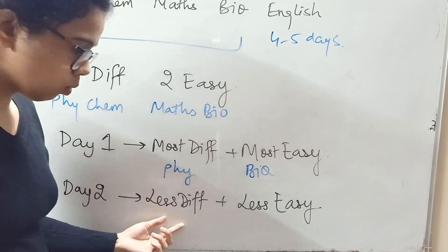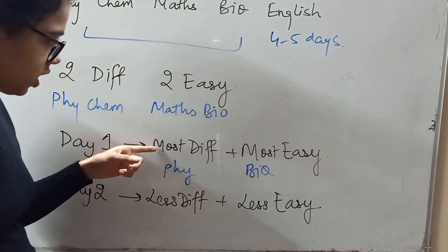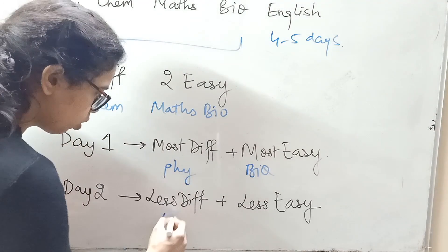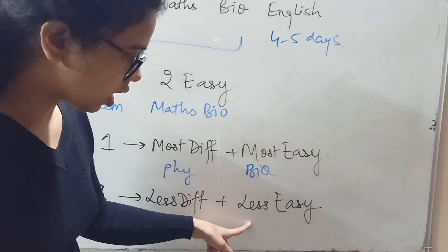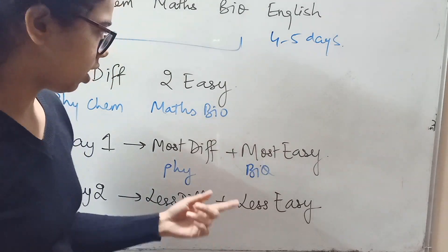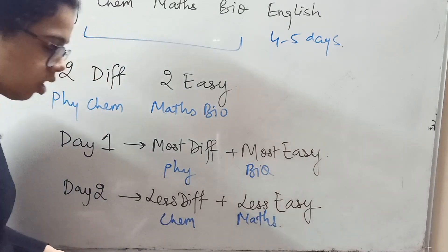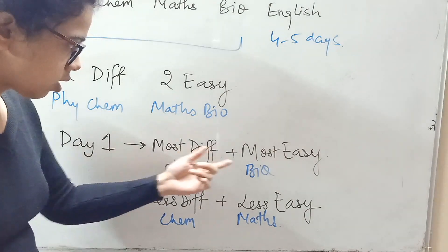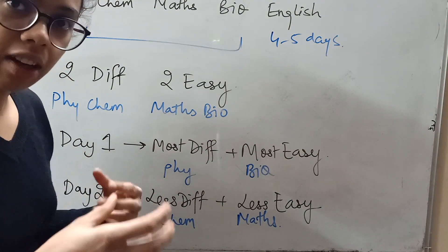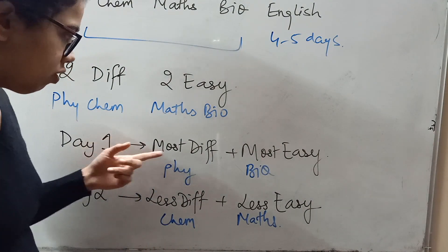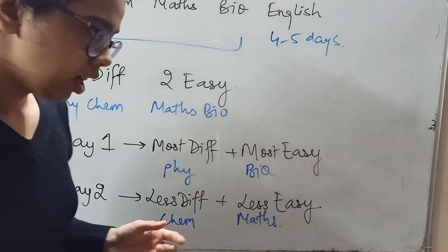On Day Two, first study the subject that is less difficult — that is Chemistry. Then for the rest of the day, study the less easy subject — that is Maths. So Day One: Physics and Biology. Day Two: Chemistry and Maths. After that, you follow the same pattern: Physics and Biology, then Chemistry and Maths, and repeat.